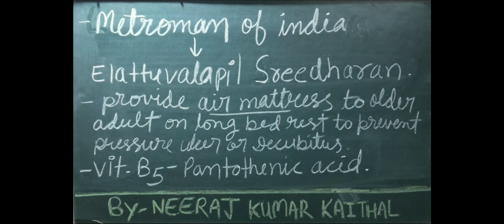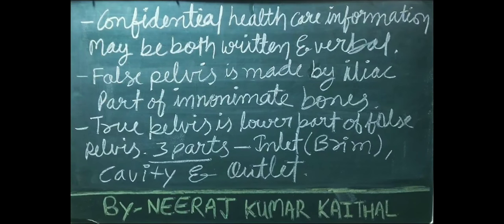Vitamin B5 is also known as pantothenic acid. Confidential health care information may be both written and verbal. The false pelvis is made by the iliac part of the innominate bones. The true pelvis is the lower part of the false pelvis, and it contains three parts: inlet or brim, cavity, and outlet.